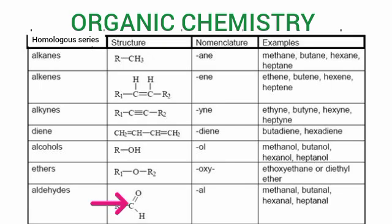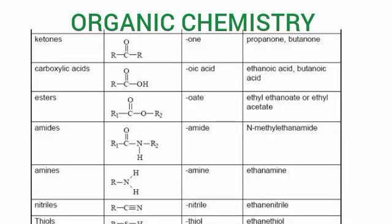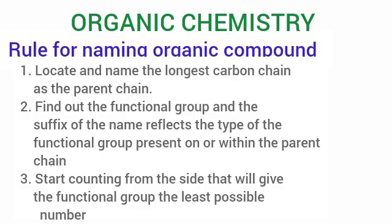Now let's go into the naming of organic compounds. The rules for naming organic compounds are: 1. Locate and name the longest carbon chain as the parent chain. 2. Find out the functional group — the suffix of the name reflects the type of functional group present on or within the parent chain. 3. Start counting from the side that will give the functional group the least possible number. Other rules will be mentioned as we apply them.